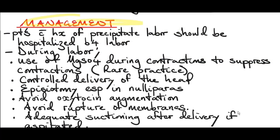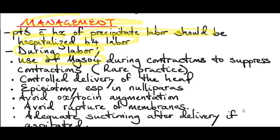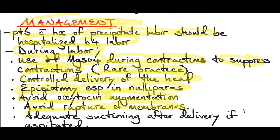Regarding management of precipitate labor: patients with a history of precipitate labor should be hospitalized before labor starts. During labor, magnesium sulfate can be used to suppress contractions, though this is a rare practice and requires proper training. Help with controlled delivery of the head. An episiotomy can be performed, especially in nulliparous women. Avoid oxytocin augmentation as this will worsen contractions, and avoid rupture of membranes since this can accelerate labor. Ensure adequate suctioning after delivery if the baby has aspirated.